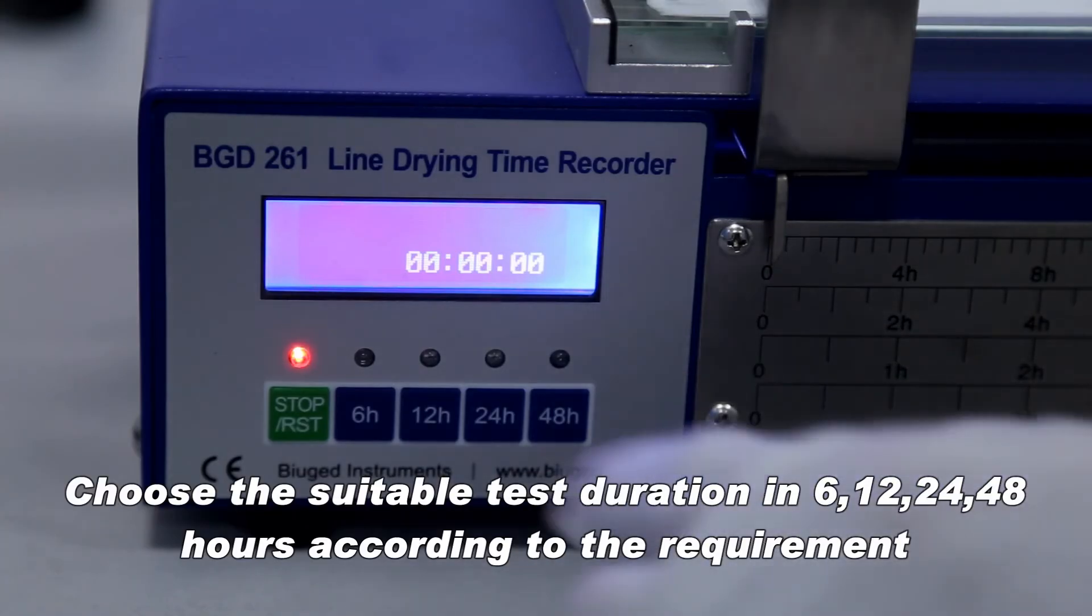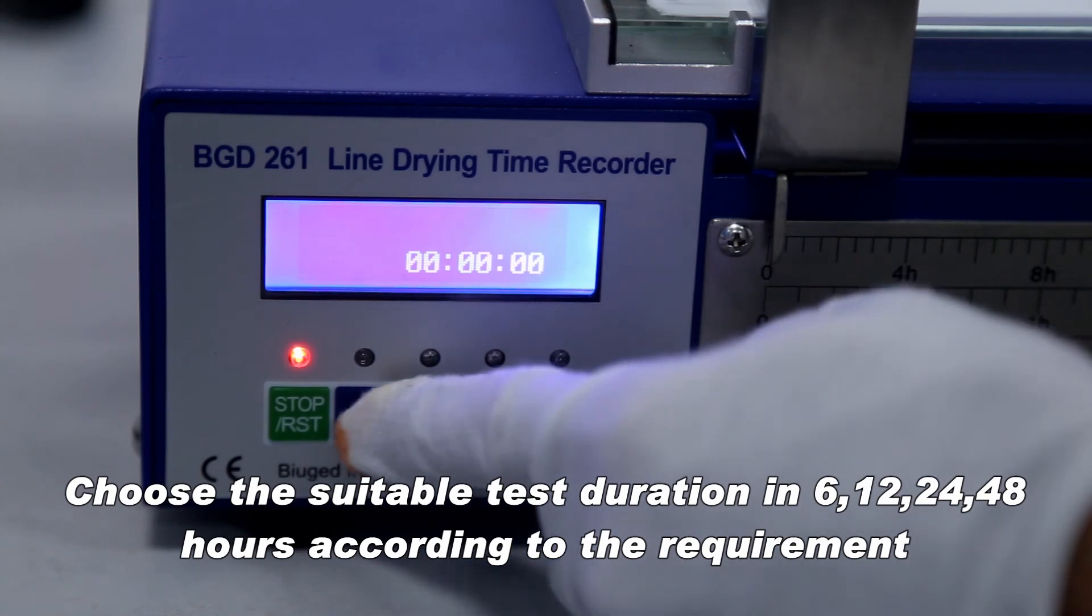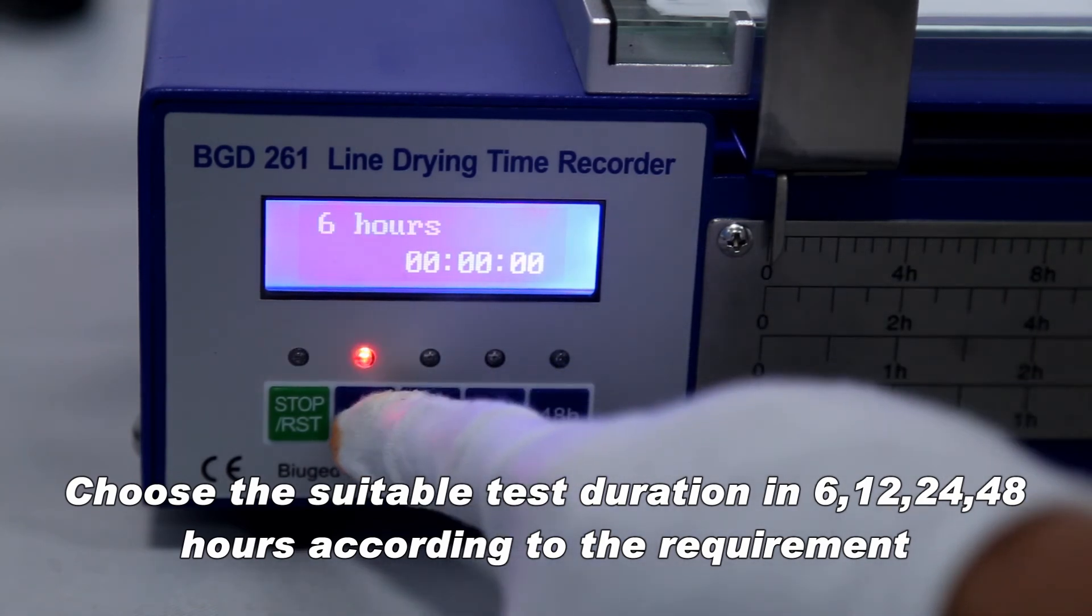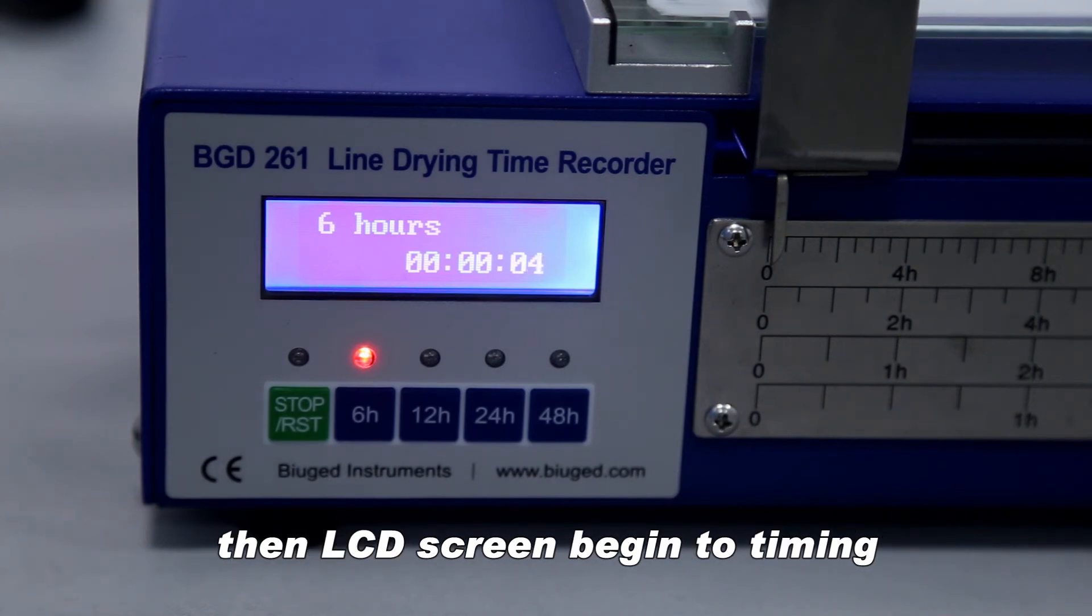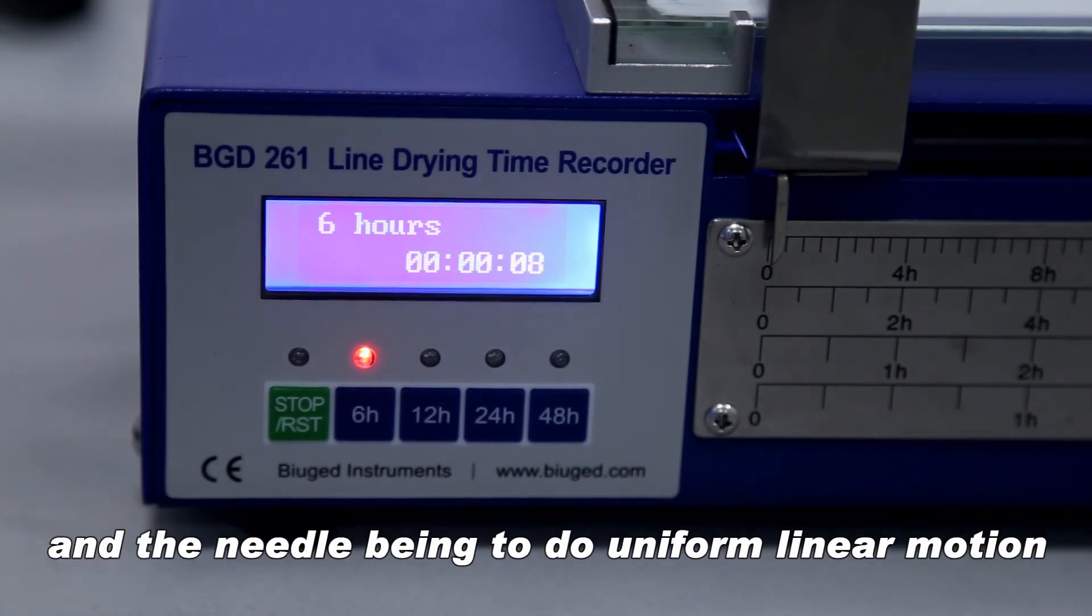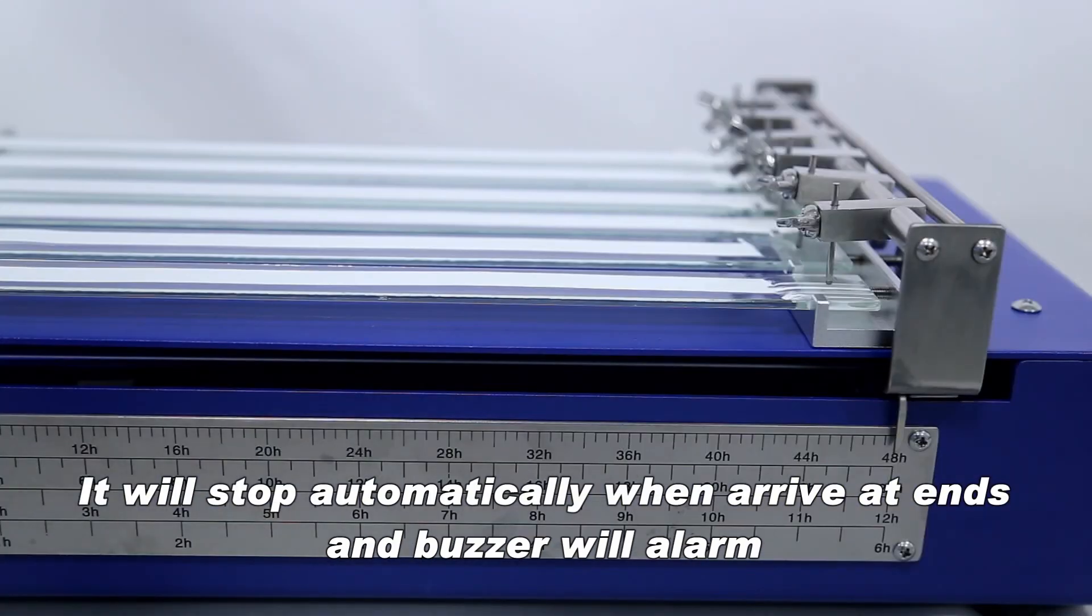Choose the suitable test duration of 6, 12, 24, or 48 hours according to the requirement. The selected speed button will light, then the LCD screen begins timing. The needle begins to do uniform linear motion. It will stop automatically when it arrives at the end and the buzzer will alarm.